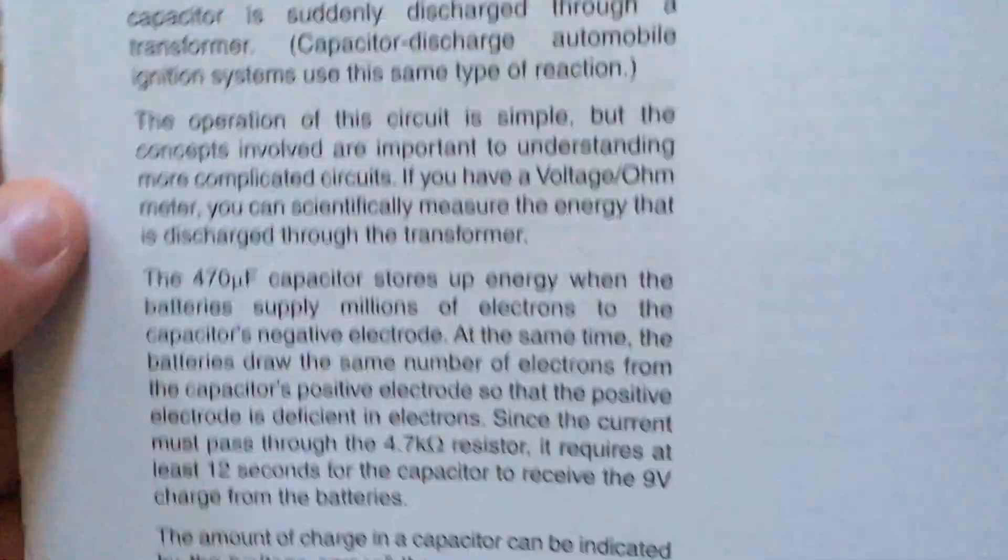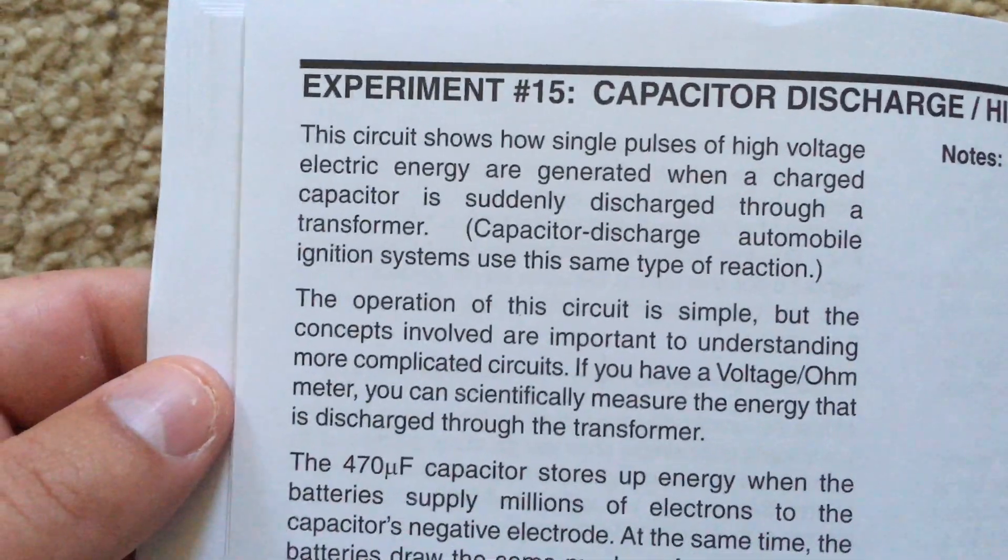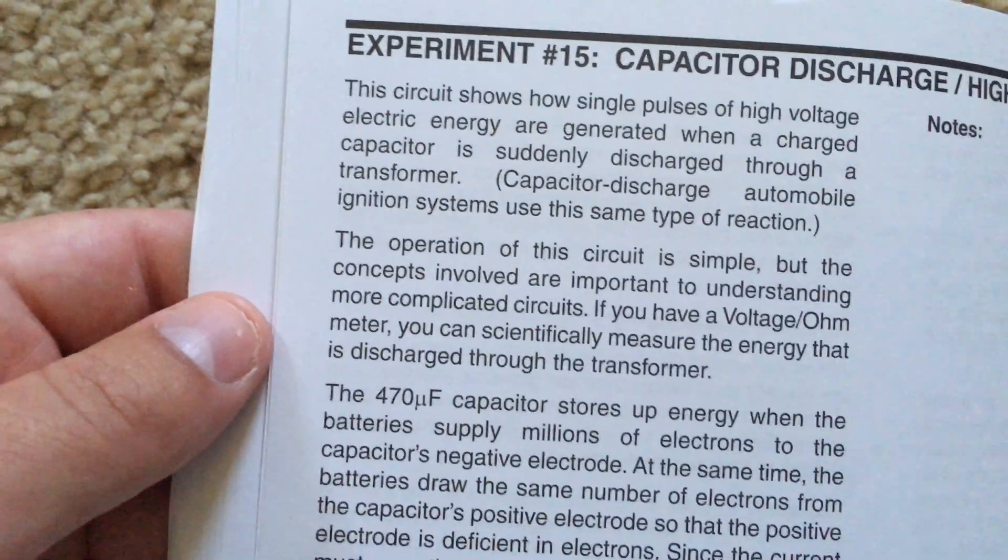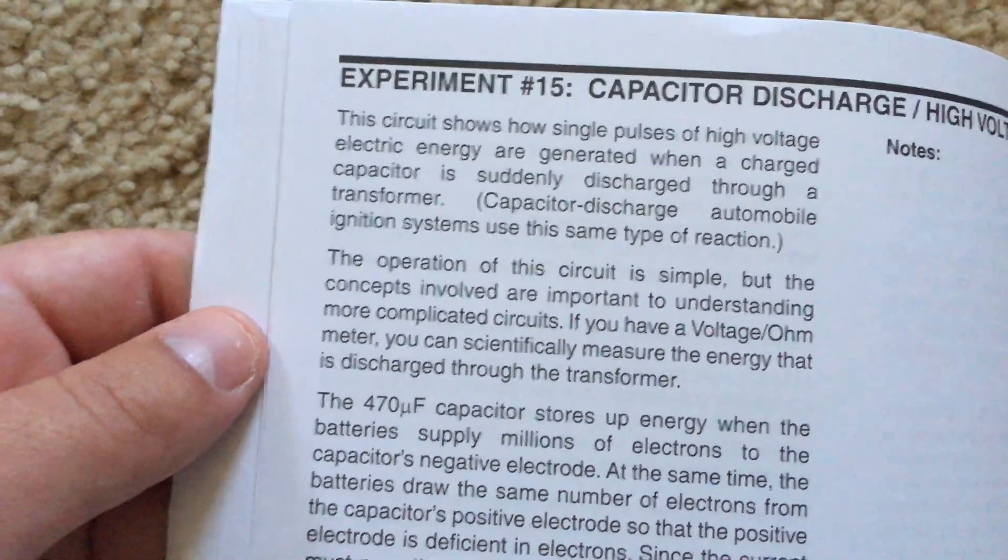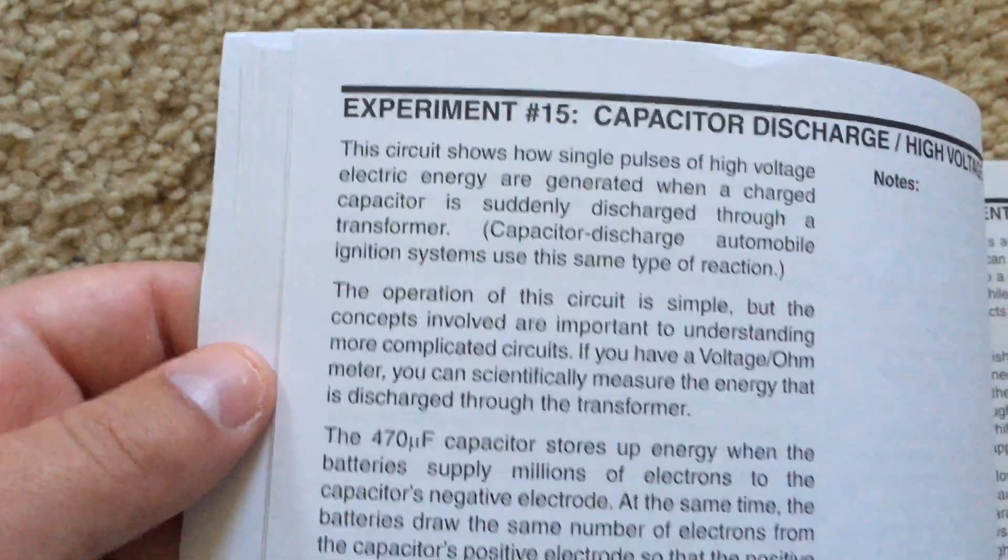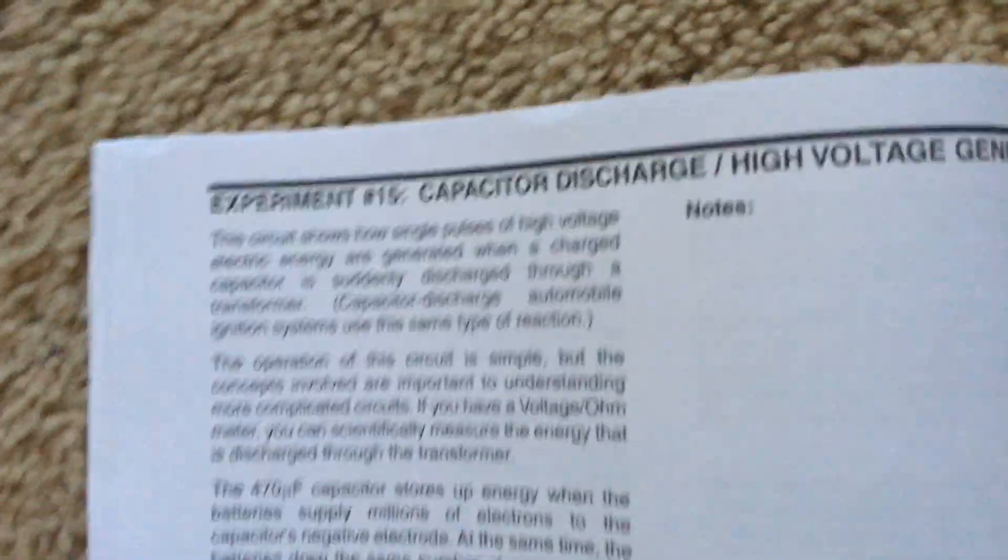I wish I was able to figure that out, but this talks about how single pulses of high voltage electric energy are generated when a charged capacitor is discharged through a transformer, kind of like in a capacitor discharge car ignition system. This will help you understand more complicated circuits.